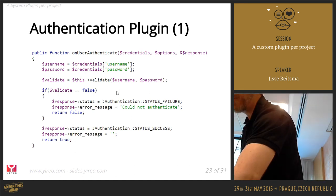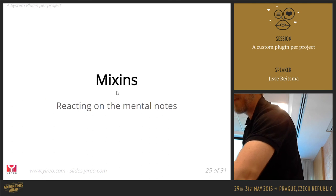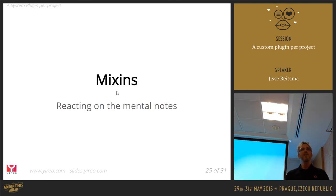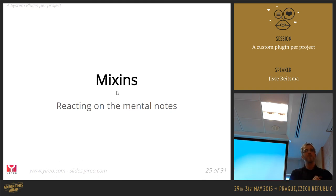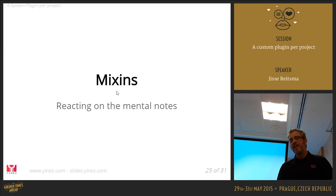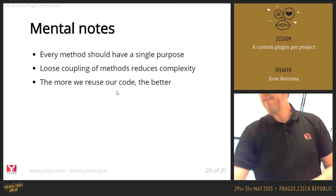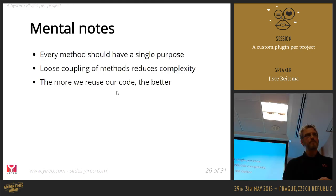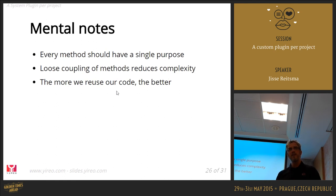The downside of traits is they require PHP 5.4 or later. If you can't guarantee your project won't run on PHP 5.3, you have a difficulty. That's why I use mixins instead of traits, and I can show you directly what's happening under the hood to make this possible.